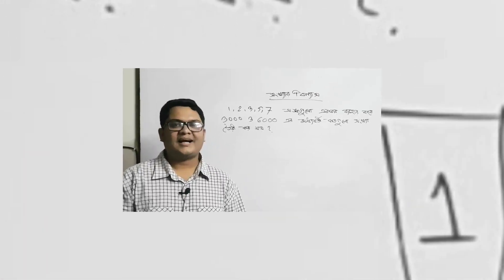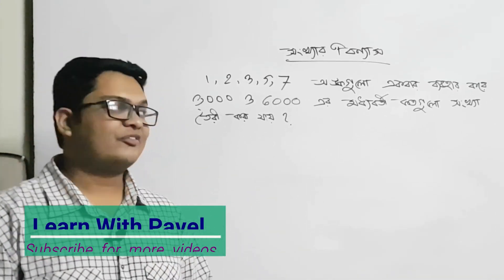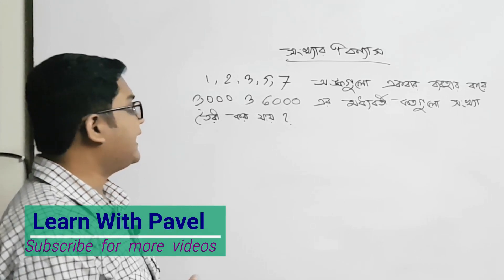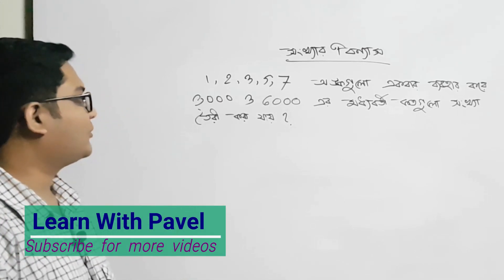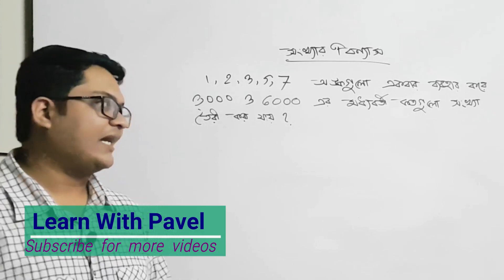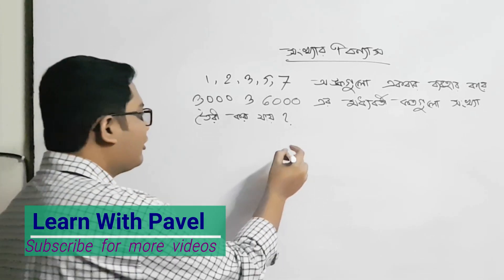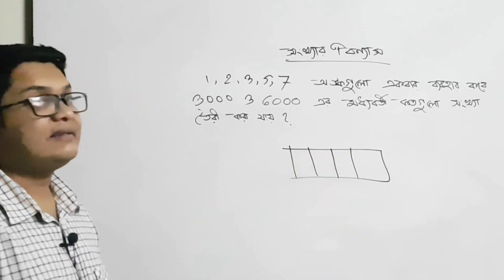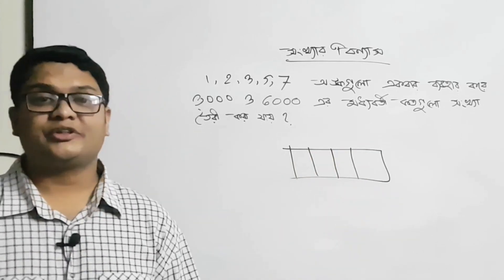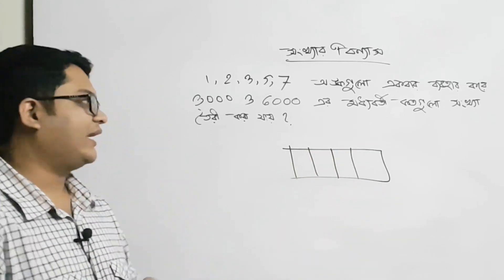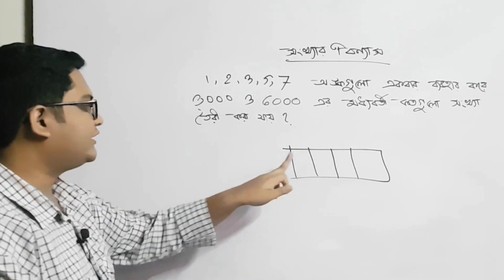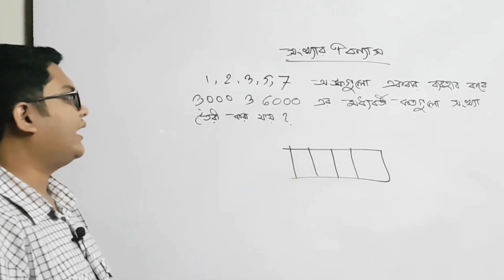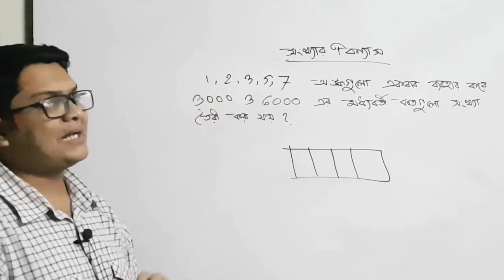এখন আমার এখানে একটা রিলেটেড প্রবলেম সলভ করি। তো প্রশ্নটা হলো: এক, দুই, তিন — এক বার বার বার — করে তিন হাজার। ছোয়াজারের মধ্যে প্রতিটি কতগুলো সংখ্যা তৈরি করা যায়? আমরা দেখতে পাচ্ছি, প্রথমে শুধুমাত্র তিন অথবা।